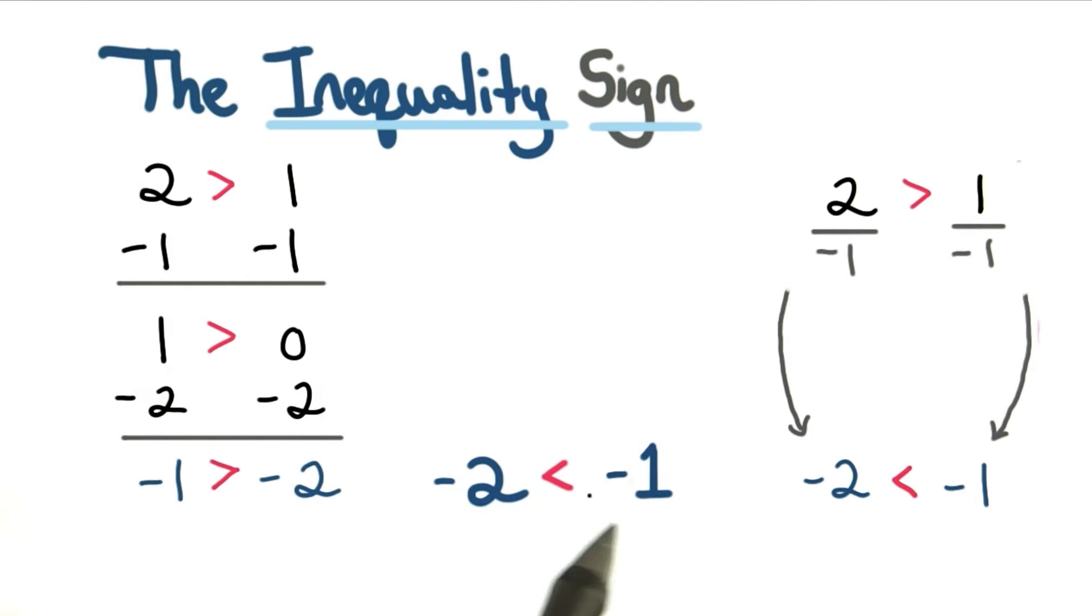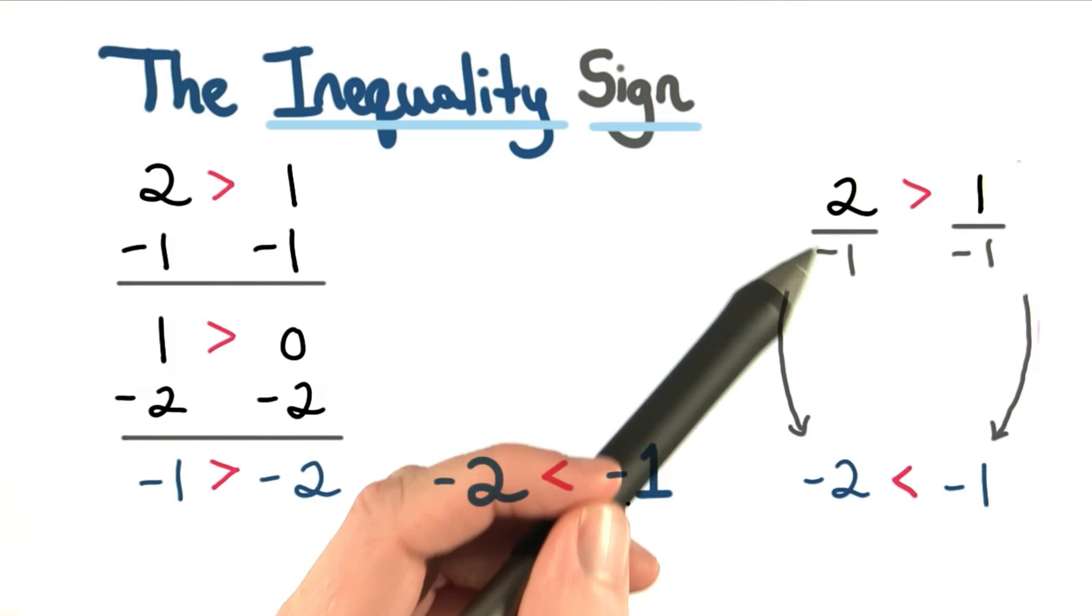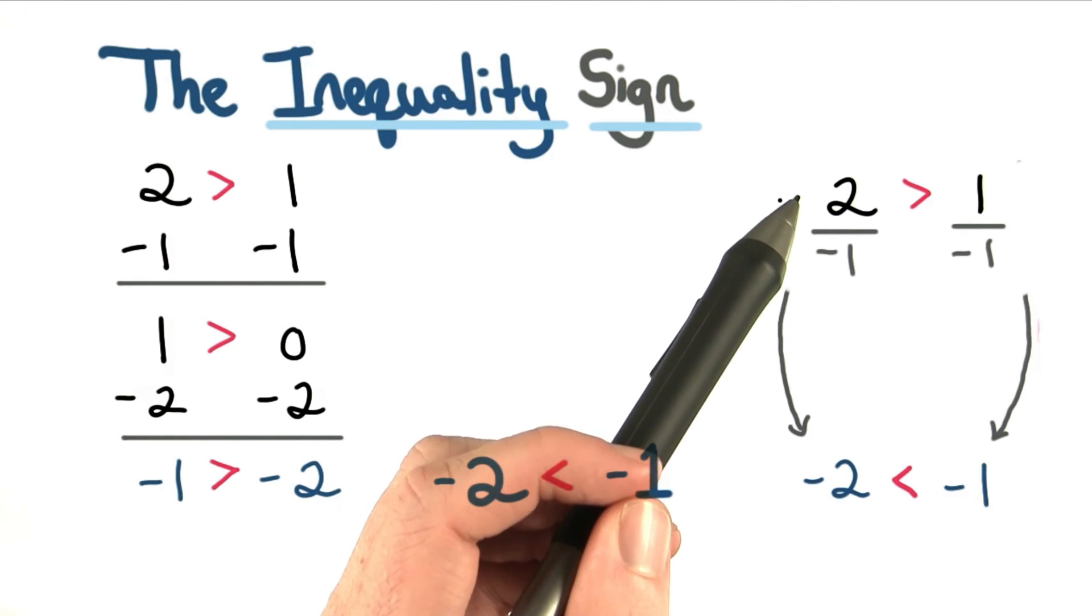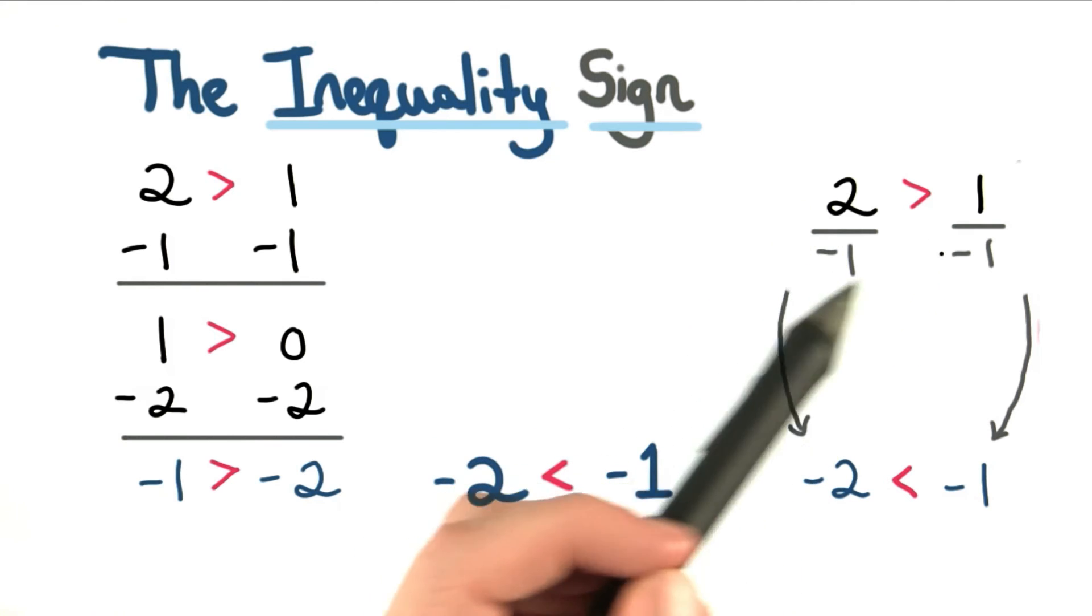We get negative 2 is less than negative 1. The key thing to remember when solving inequality problems is to reverse the direction of the sign when you multiply or divide both sides by a negative.